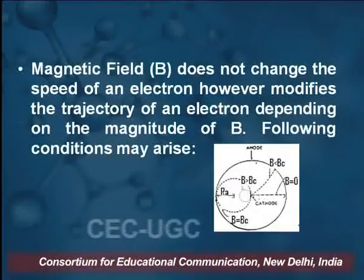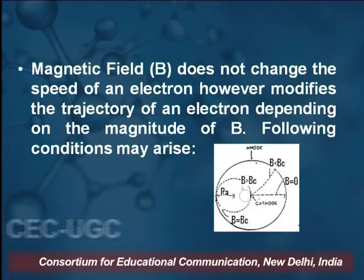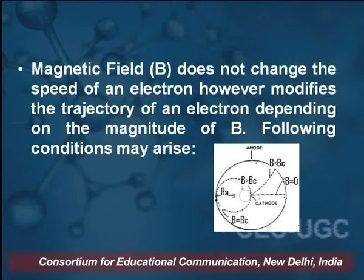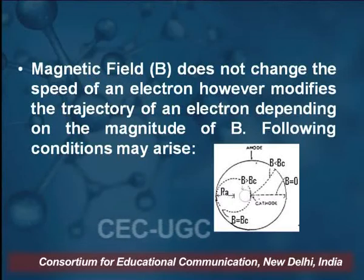We are discussing the behavior of the magnetic field for the E by m ratio. The magnetic field, as we know, does not change the speed of the electron in this case, but it modifies the trajectory of the electron depending upon the magnitude of B. The magnitude of B determines how much the basic path will change, but the speed will remain the same.